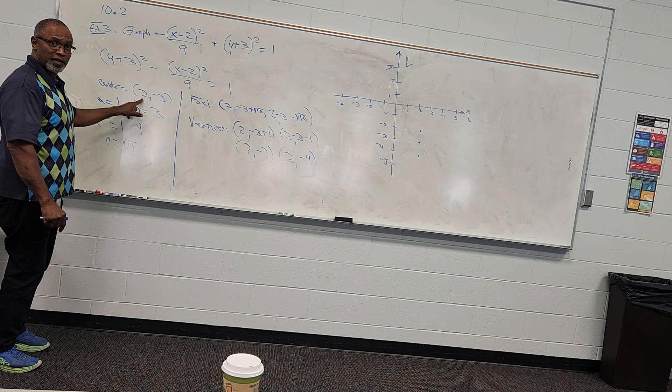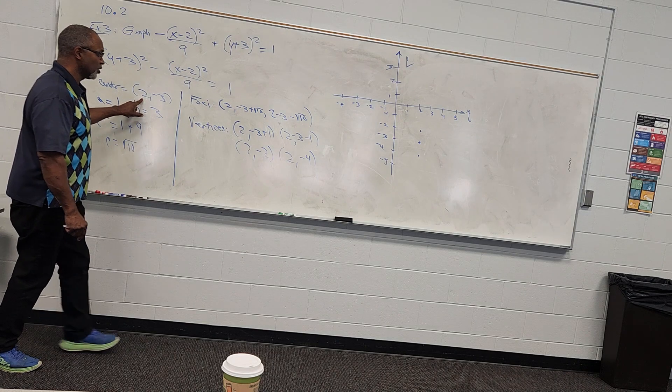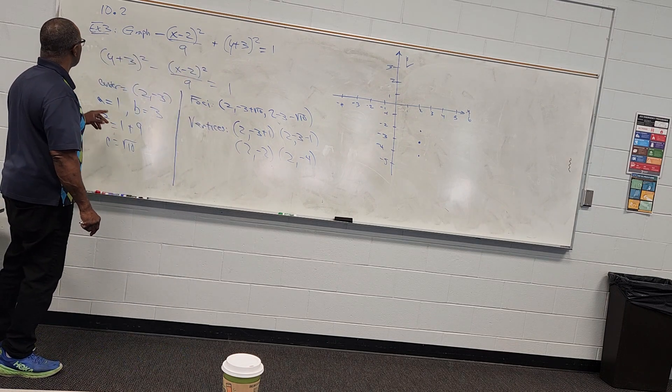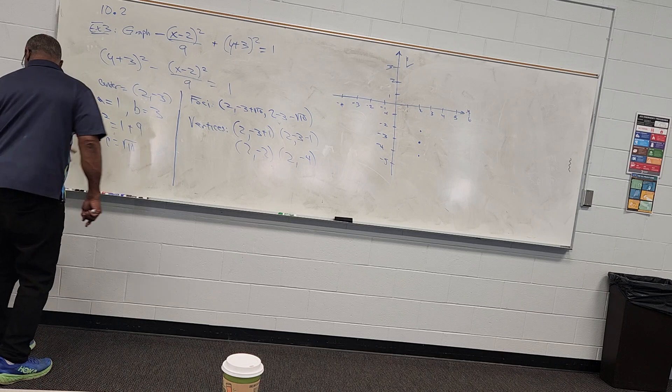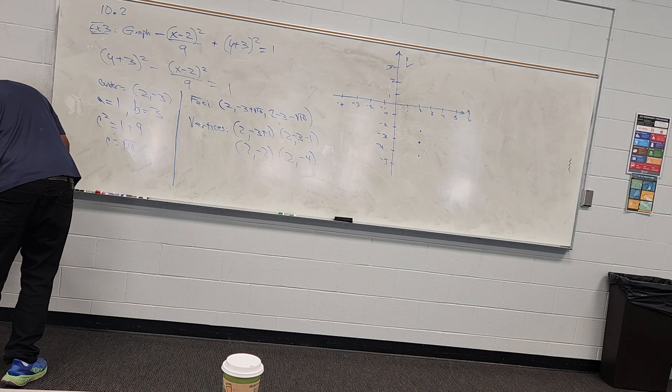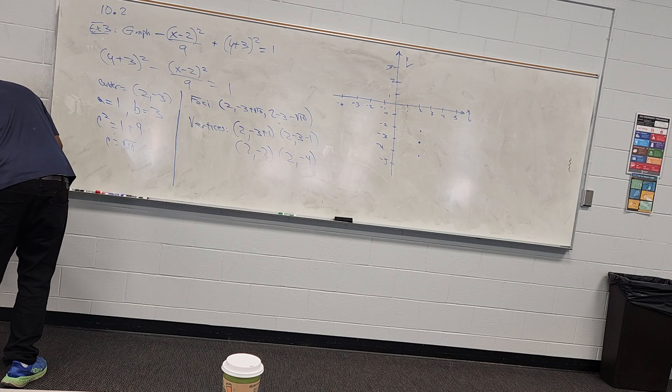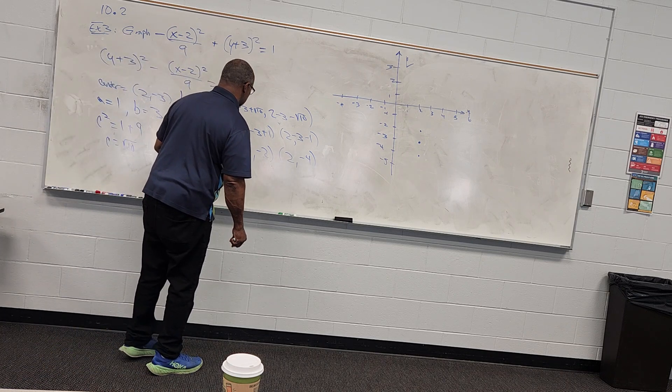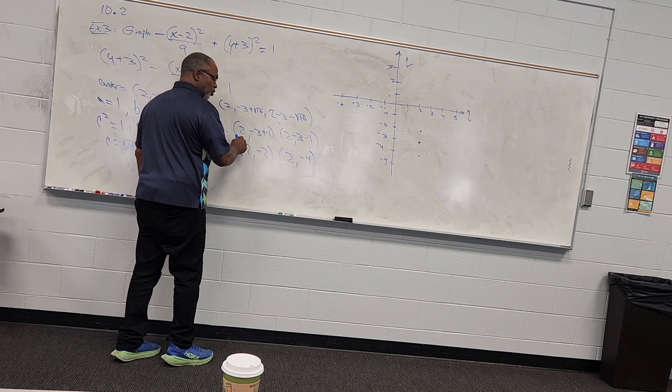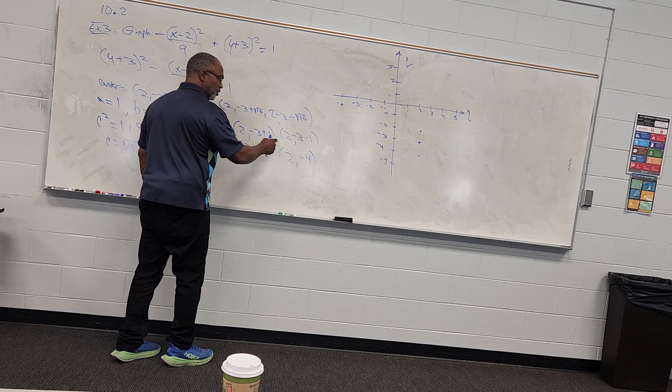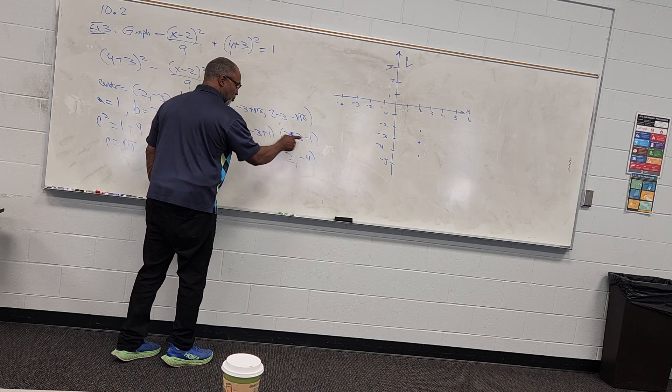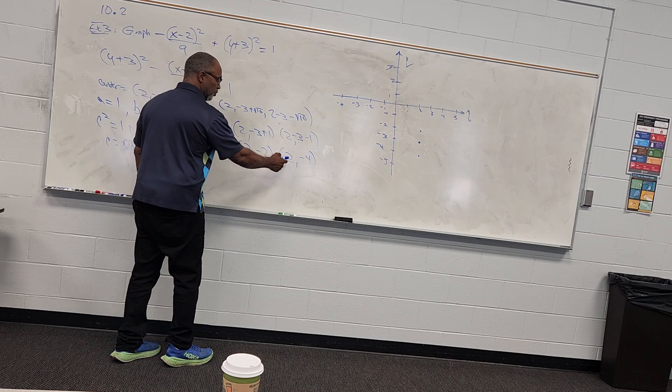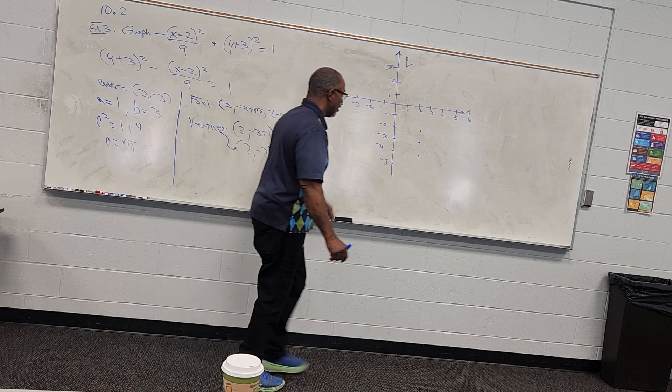Same kind of thing works for my vertices. I'm going to take my center. Since a was 1, my vertices are 1 unit above and below the center. So 2, negative 3 plus 1, and 2, negative 3 minus 1. I'm going to add and subtract 1 to my y coordinate. So my vertices become 2, negative 2, and 2, negative 4.